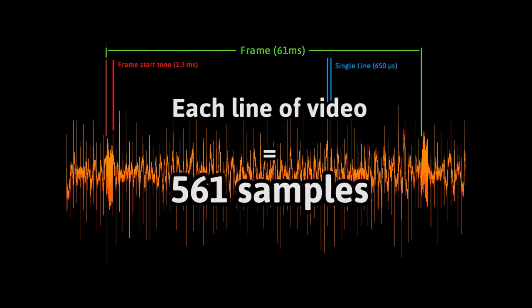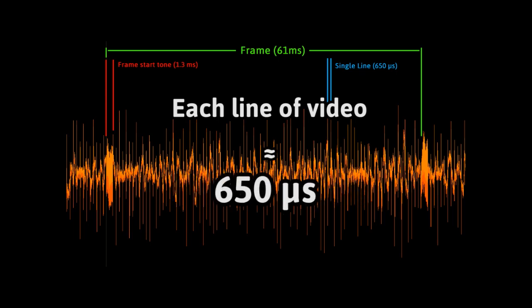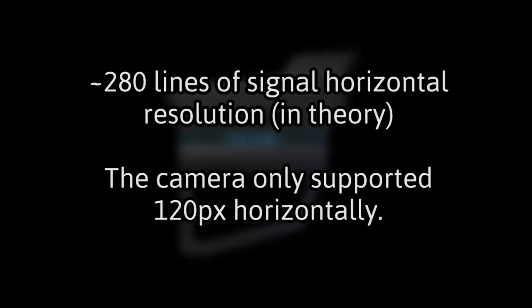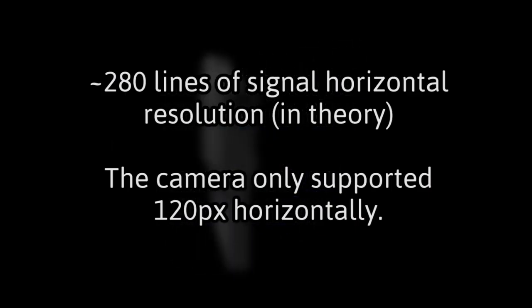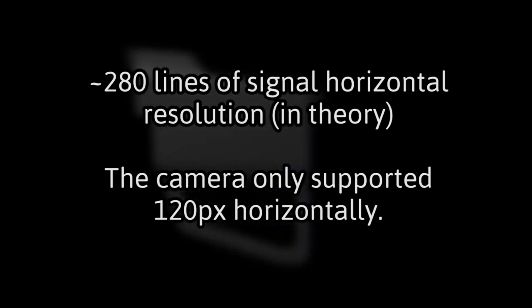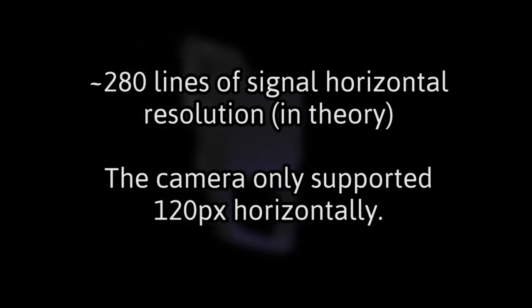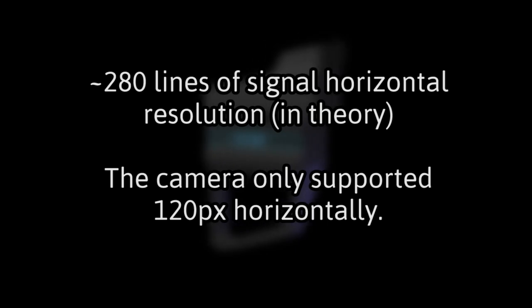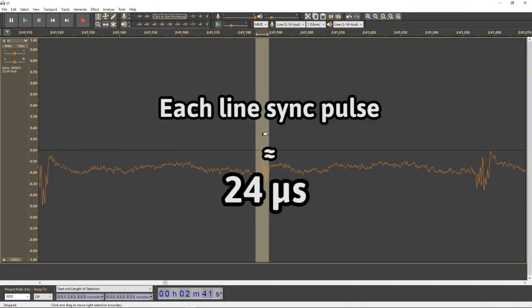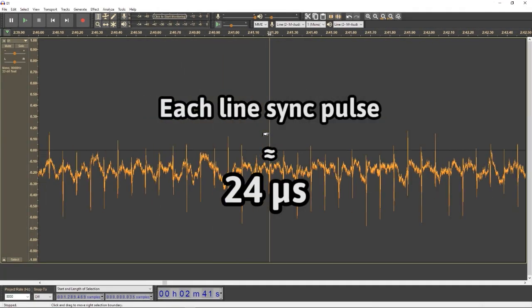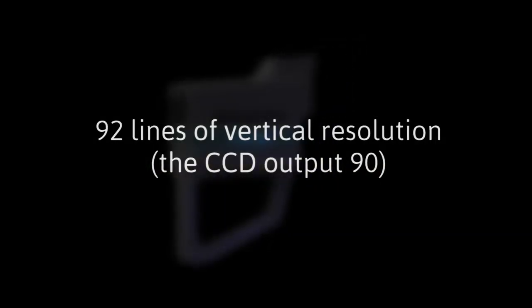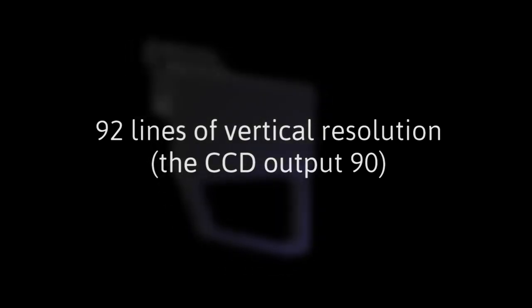Each line of video is around 561 samples, so it's almost 650 microseconds in length in real time. Furthermore, having captured the tape signal at a sample rate of 96 kHz means that we get 280 pixels of horizontal resolution according to the Nyquist theorem. Each line includes a roughly 24 microsecond sync pulse. That also gives us 92 lines per frame of video when we take the beginning tone and tape speed fluctuation into account.